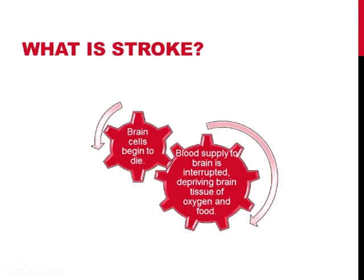First off, let us define stroke. A stroke occurs when brain cells die, causing blood and oxygen supply to the brain to be interrupted. This may result in fainting, paralysis, or inability to talk properly.